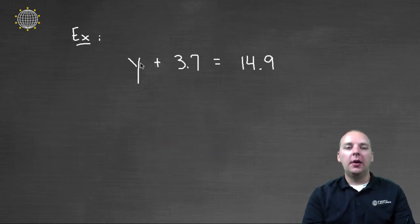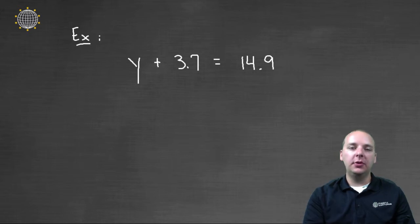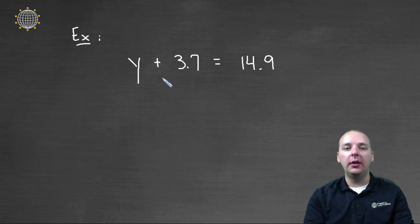Let's try one more. Here we have Y plus three point seven equals fourteen point nine. Well you can actually do something similar to the addition property called the subtraction property. So again, if you're trying to isolate the Y here by itself, and you have an extra three point seven that you don't want,